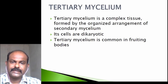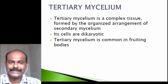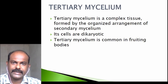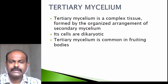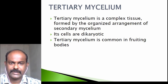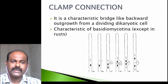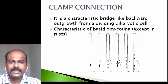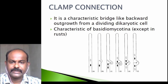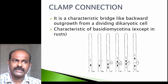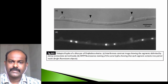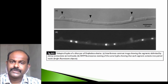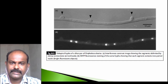Regarding the tertiary mycelium, it is a complex tissue formed by the organized arrangement of the dikaryotic hyphae, and is formed in the fruiting bodies — that is, the basidiocarp. Clamp connections are a characteristic bridge-like backward outgrowth from the dividing dikaryotic cell, characteristic of Basidiomycotina, except in the case of rusts where clamp connections are absent.